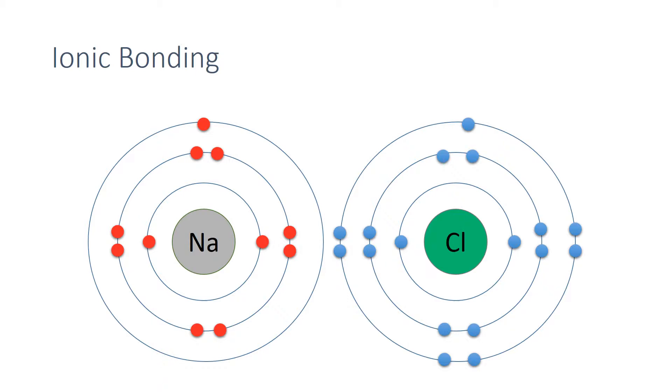Therefore, the sodium atom can donate an electron to the chlorine. As the sodium atom has lost an electron, it becomes positively charged. And as the chlorine has gained an electron, it becomes negatively charged.